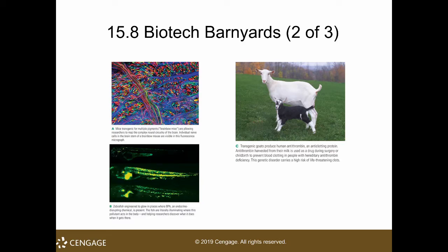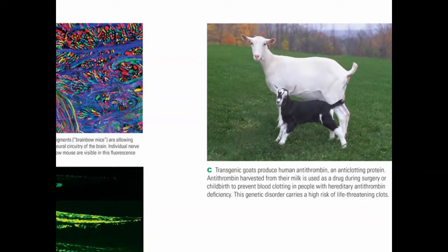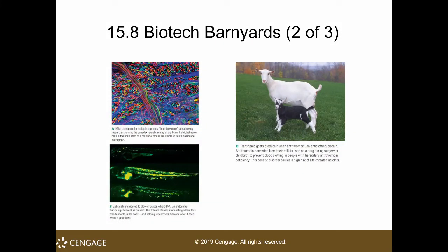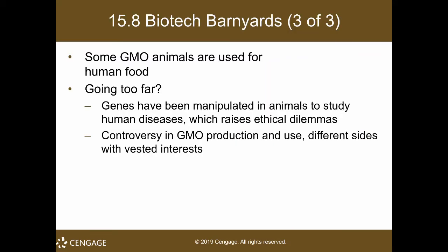Here is a transgenic goat that can produce antithrombin, which is an anti-clotting protein. They use animals instead of bacteria because the proteins are very complicated and difficult for bacteria to synthesize. Can some GMO animals be used for human food? As far as we know, it is not recommended because something was modified and we still do not know if there are any lasting effects. Genes have been manipulated in animals to study human diseases, which raises ethical dilemmas — specifically animal rights.